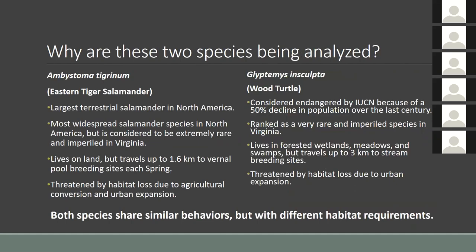I decided to use these two species because of their similarities but also their differences. They share many characteristics — similar in size, both in need of protection under the Natural Heritage Program, and both migrate to breeding sites annually. However, there are differences especially in their selection of breeding sites. The Eastern Tiger Salamander spends most of its life on land before migrating 300 meters to one and a half kilometers to vernal pool breeding sites. The Wood Turtle spends much of its time in forested uplands before traveling up to three kilometers to breeding sites in streams. The threats each species faces are also dependent on their habitat.